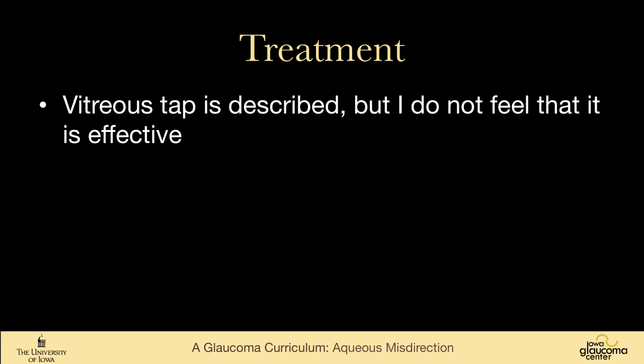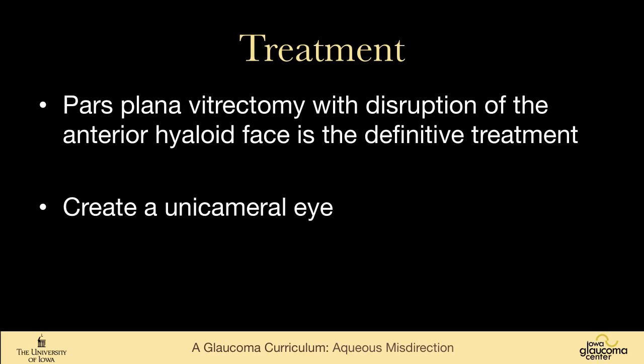The books describe vitreous tap, though I've had very little success with that. The definitive therapy is a pars plana vitrectomy. When the vitrectomy is done, one needs to go through the zonules, through the iris into the anterior chamber, and create a unicameral eye. If someone has had aqueous misdirection in one eye, I've had the retina team do a prophylactic pars plana vitrectomy when doing a tube shunt or other surgery in the fellow eye.